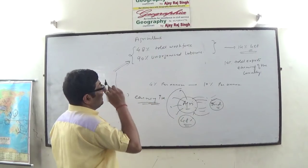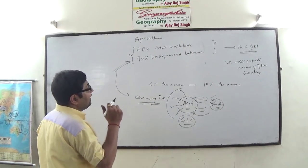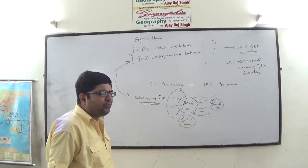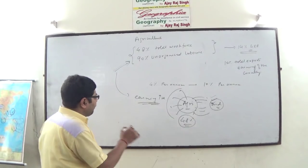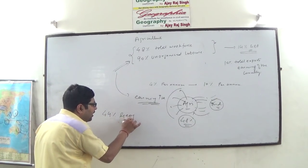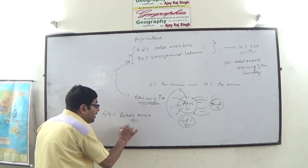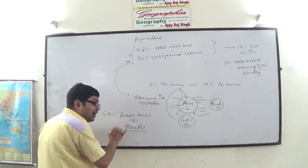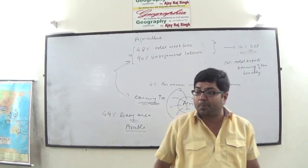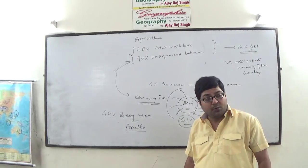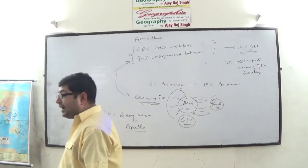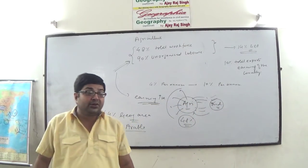India is one of the few large countries where 44% of the geographical area is arable — that is, which can be put to cultivation. In China it is just 13%. In India 44% of the area is arable. As a result of this large arable area, India has huge potential to increase its production.